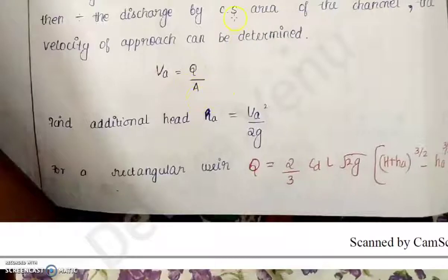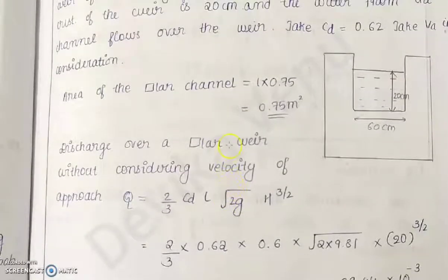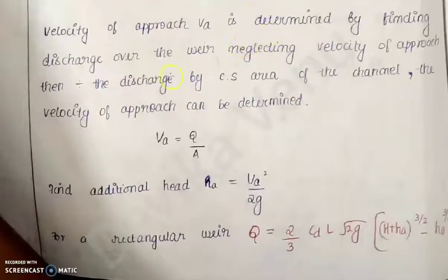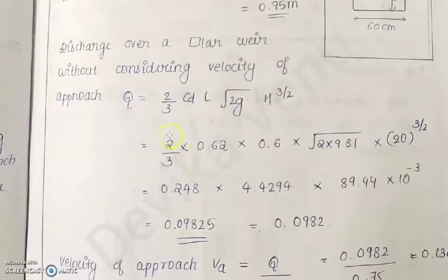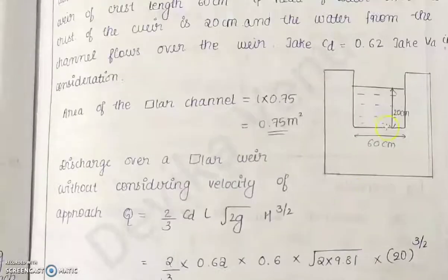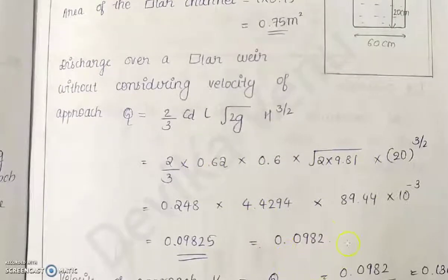First I have found out the area of the rectangular channel, that is 0.75 meter square, to find out the velocity of approach since VA = Q/Area. For that you need the cross-sectional area of the channel. Next, to find out the discharge over the rectangular weir, first you find out the discharge without considering VA — neglecting velocity of approach. That discharge divided by cross-sectional area of the channel gives velocity of approach. By substituting all values — h = 0.2 meters, L = 0.6 meters — you get Q = 0.0982 meter cube per second.